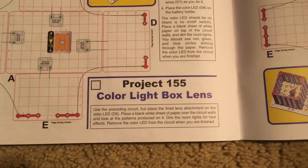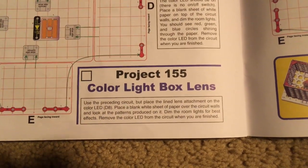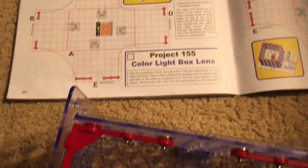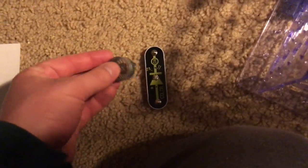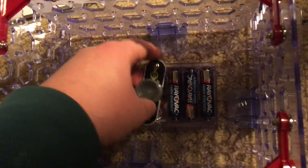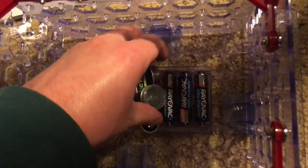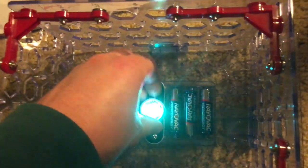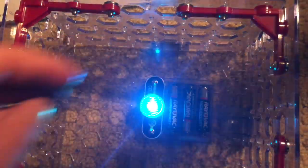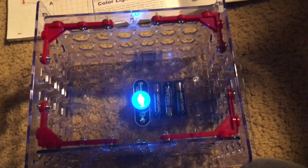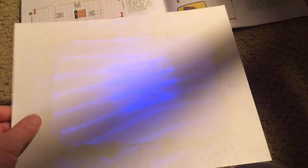Project 155, color light box lens. We'll use the preceding circuit but place the light diffuser over the color LED before inserting it on the battery. Just adjust it for best effects and we're going to place the piece of paper over the circuit and turn off the light.